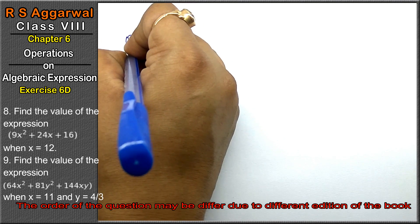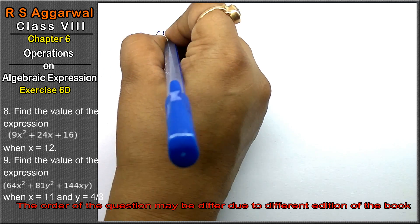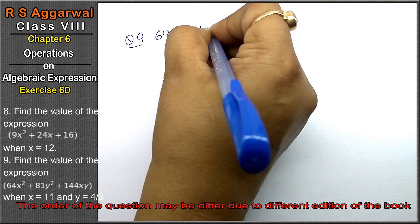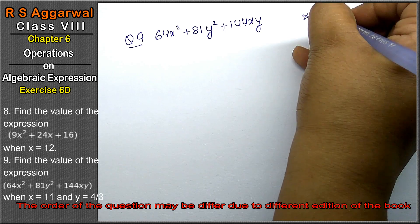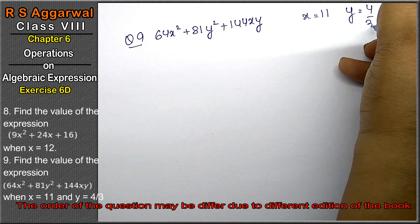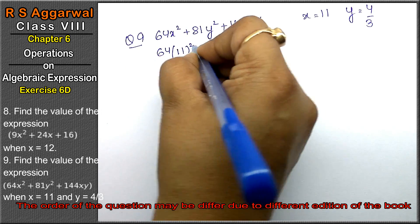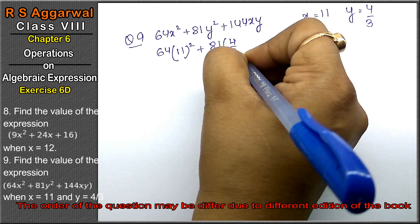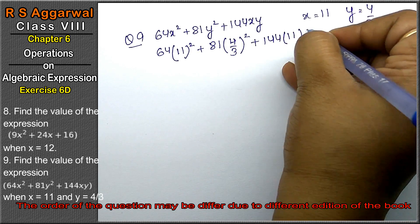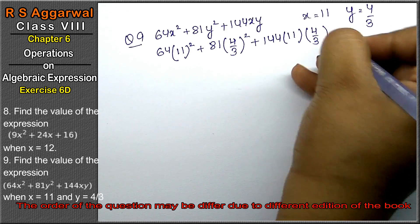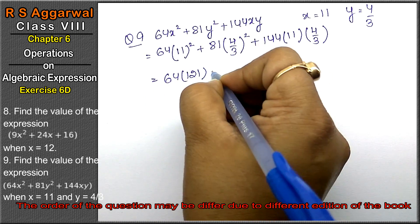Let's do question number 9 of exercise 6D, that is algebraic expression. Question number 9 is: find the value of the expression 64x² + 81y² + 144xy when x = 11 and y = 4/3. So we substitute: 64 × 11² + 81 × (4/3)² + 144 × 11 × (4/3).